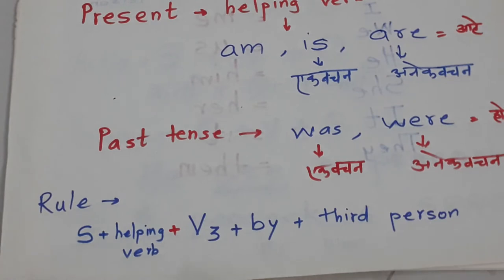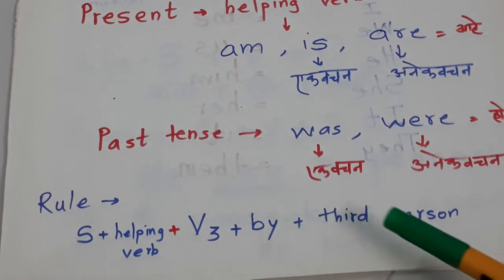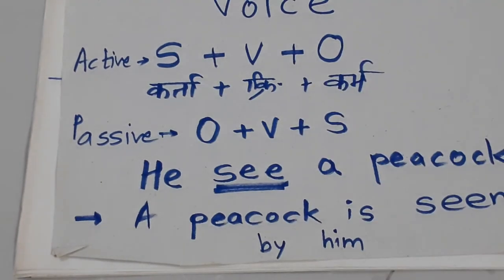So this is the rule. The rule is: Object plus helping verb, which we will use according to the sentence, plus V3, the third form of the verb, by, and third person. Keep this rule in mind as it will help with all the sentences we do. Now let's take examples and see them.